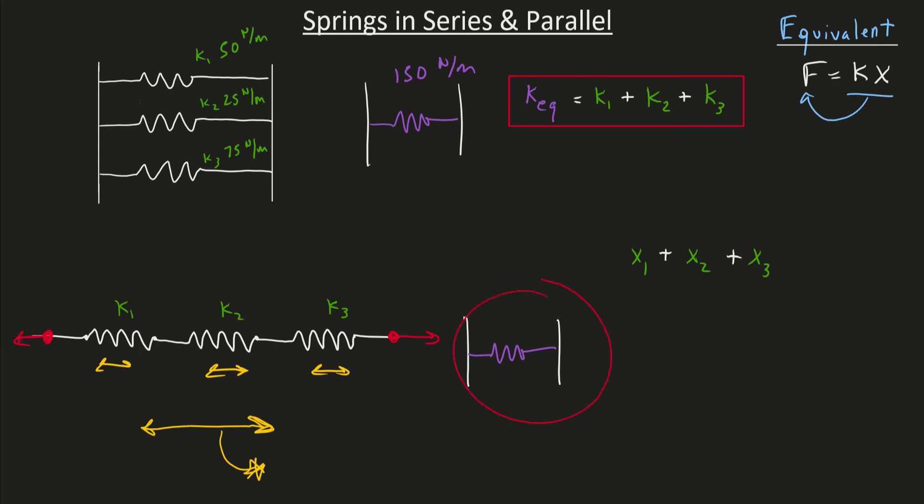So looking at our equivalent spring that we're looking to create, this equivalent spring must stretch this complete entire distance as well. So I'll say that the stretch of our equivalent spring must equal the total stretch that our system behaves with. So this right here is the statement that we start with.